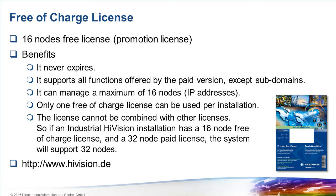Also, the promotion license cannot be used in conjunction with a paid license. If a paid license is installed, the promotion license becomes invalid. To get the promotion license, follow the same procedure as for a paid license: download and install Industrial HiVision, make a note of the hardware key, and go to the license website at www.highvision.de. Select the license menu and follow the instructions. The site also includes a video which walks through the installation and licensing process.